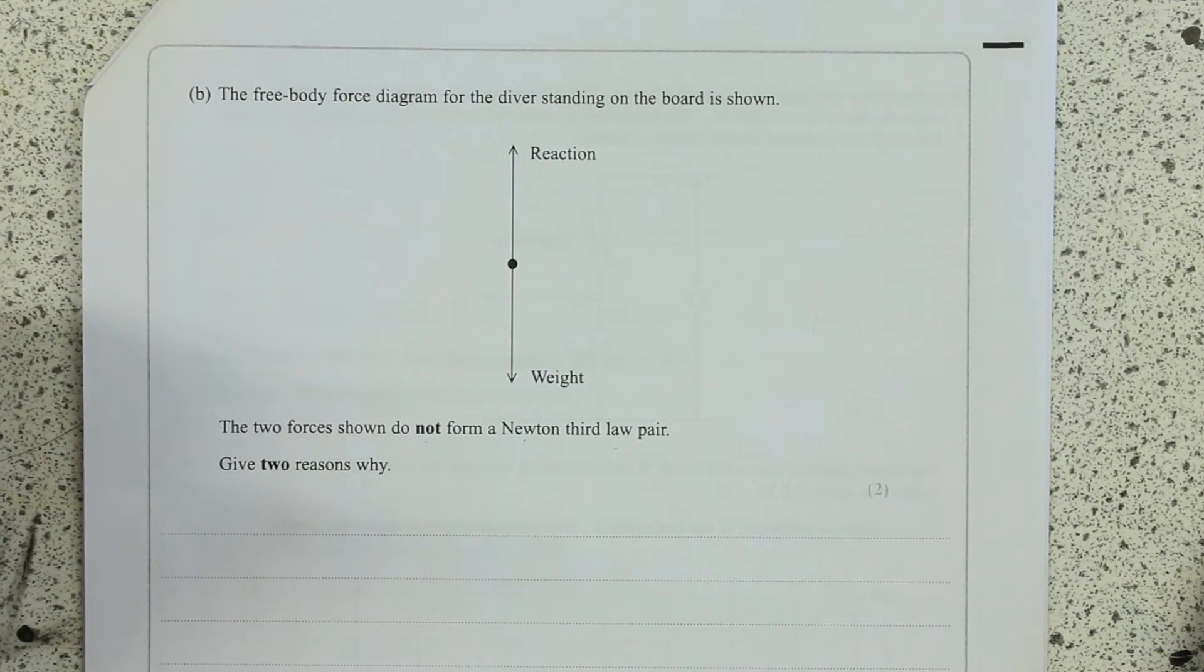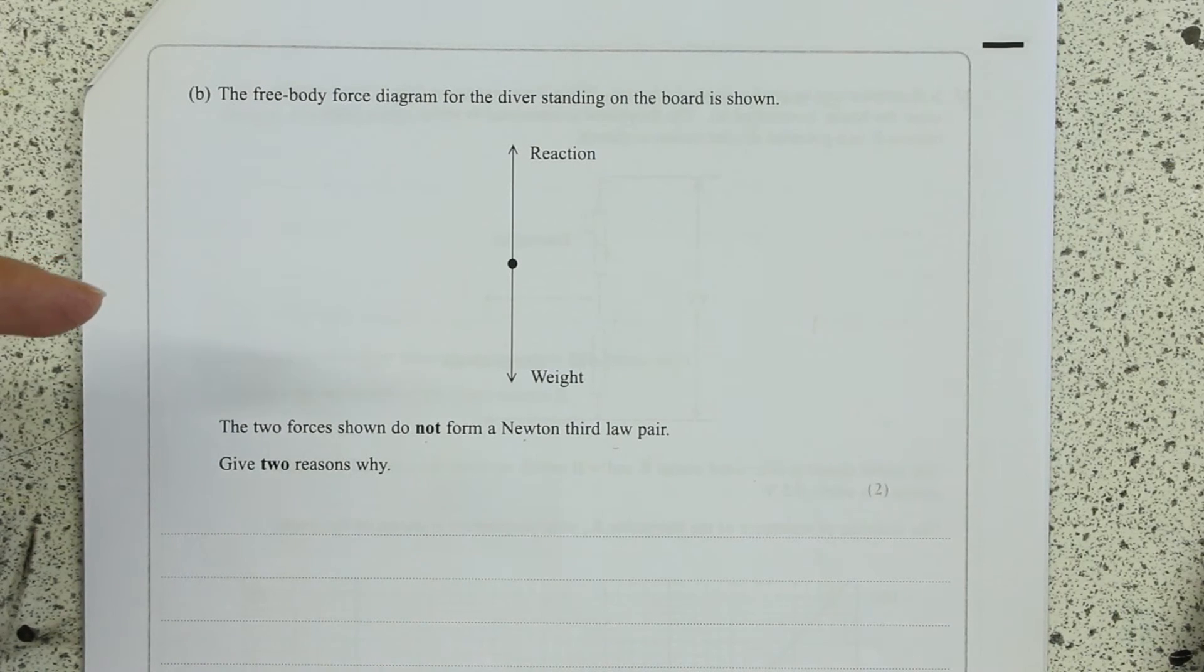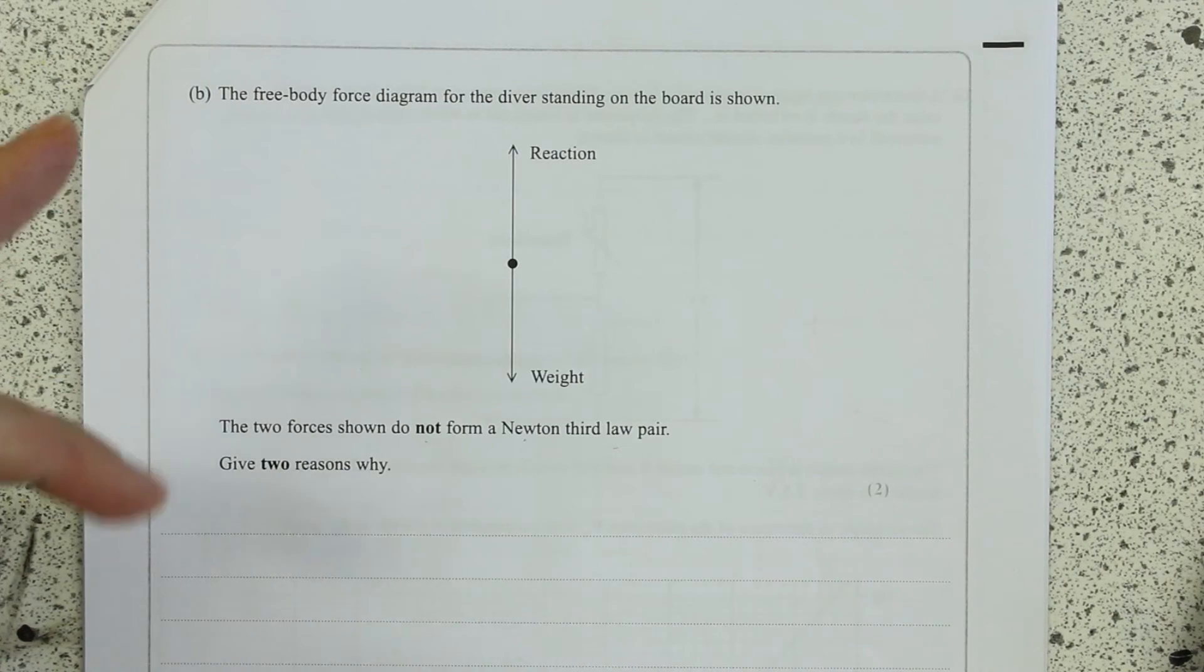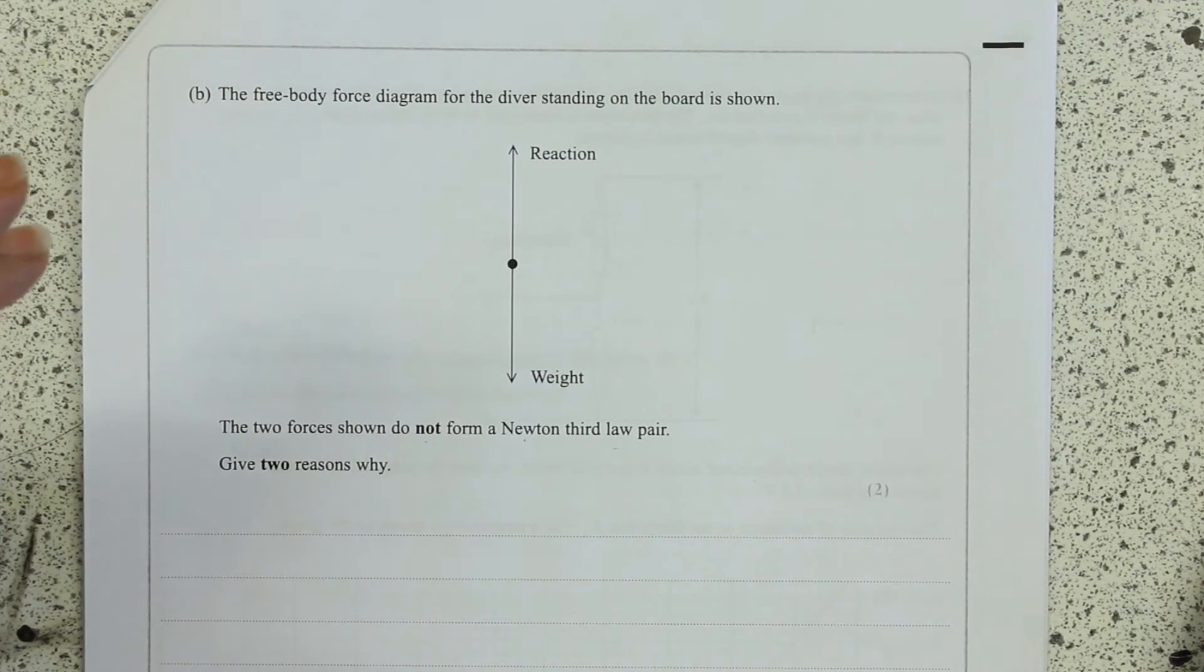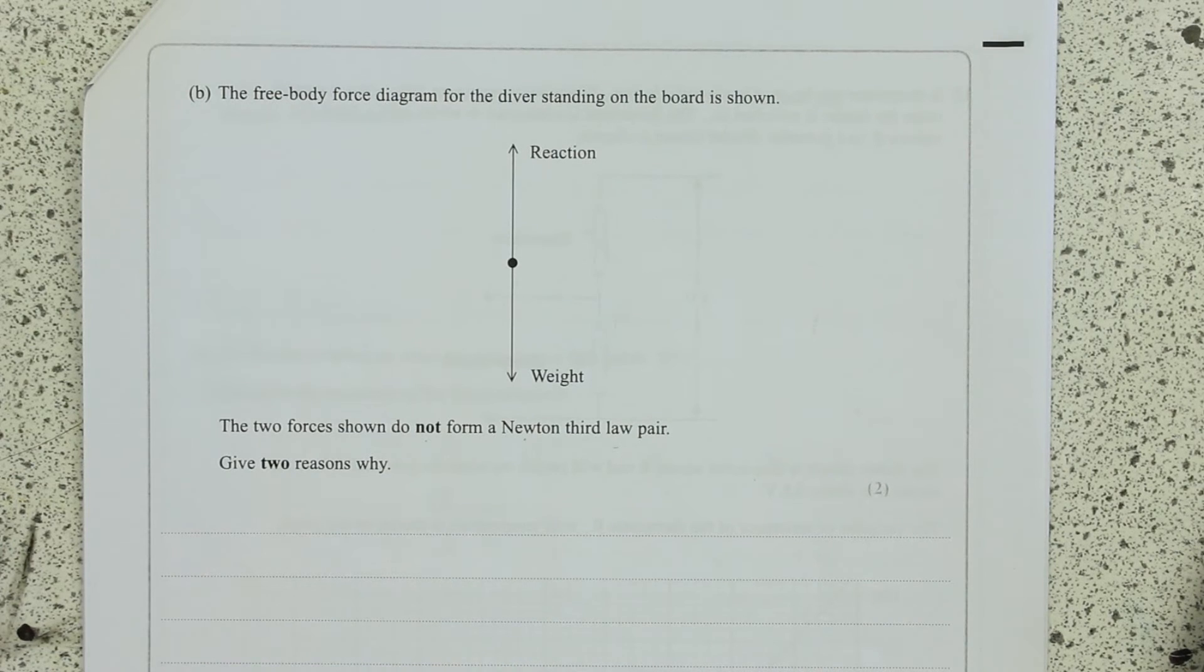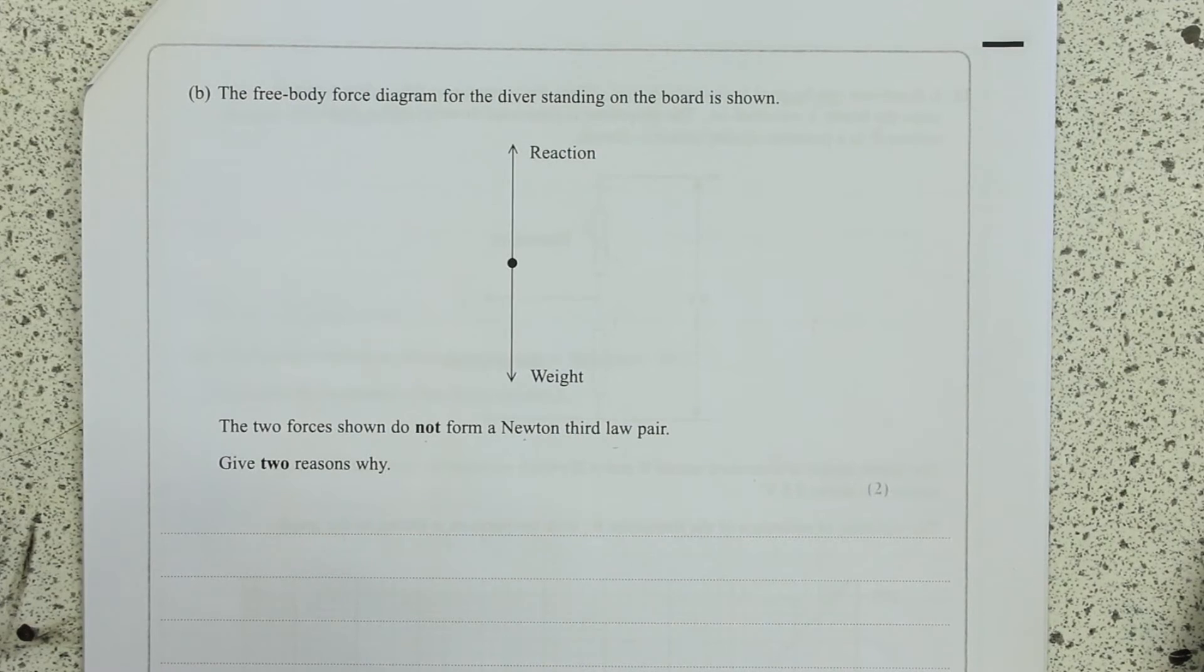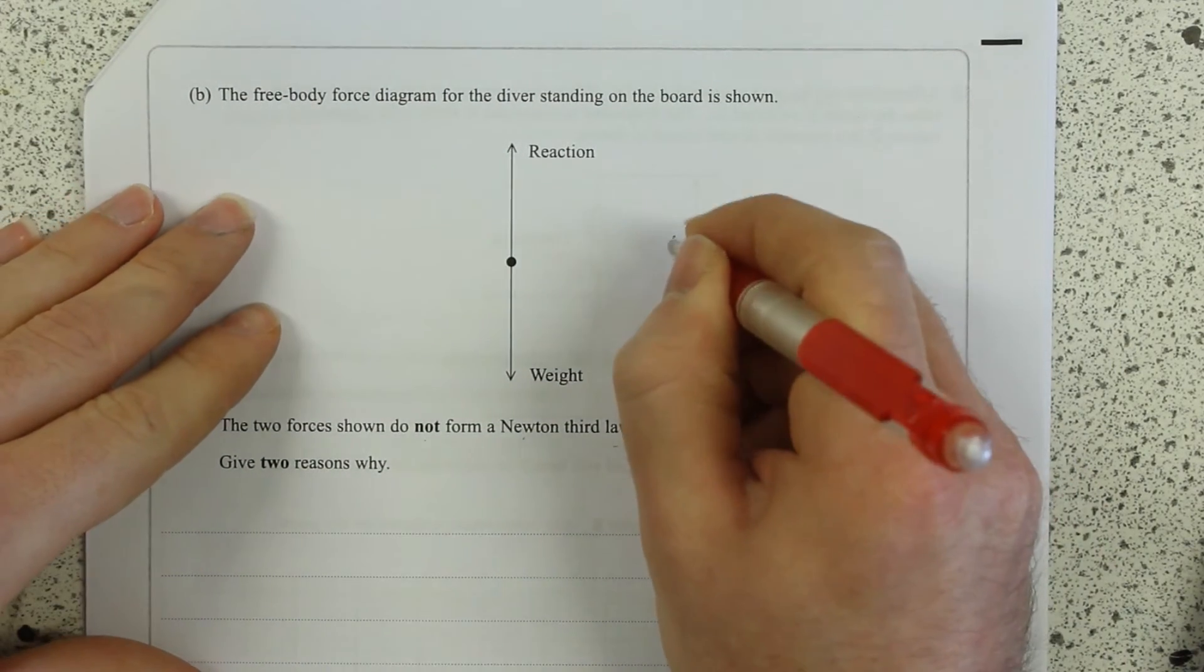Two reasons why this is not a Newton's third law pair. So you need to have the expanded definition that Newton's third law pairs always have the same size, the same line of action but in opposite directions, the same time of action, act on different objects, and must be of the same type of force.